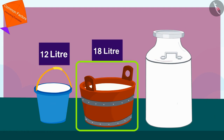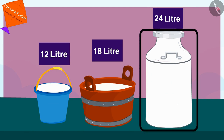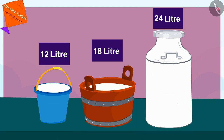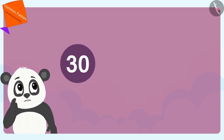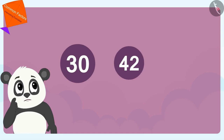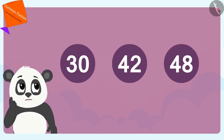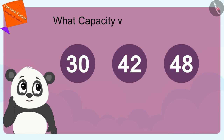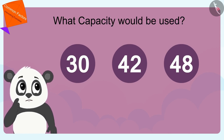In this way, Golu came to know that 12 liters of milk are filled in the first pot, 18 liters in the second one, and 24 liters of milk in the third pot. Children, if Golu's pots were filled with 30, 42, and 48 liters of milk, can you tell what capacity vessel would be used? If you want, you can pause the video and find the answer.